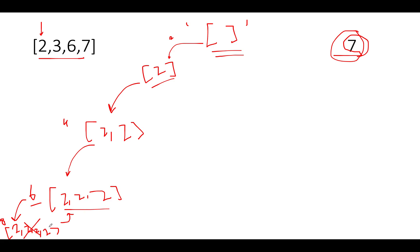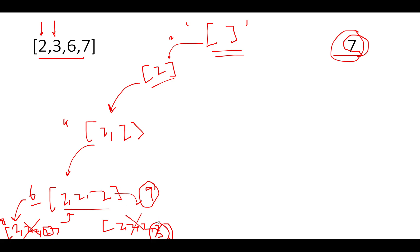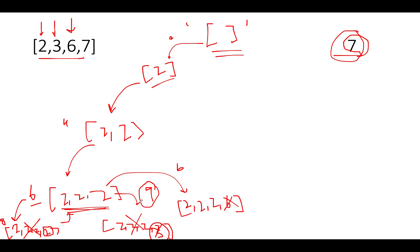We revert to [2, 2, 2] by deleting the last element. The next element in the array is 3, so we add it: [2, 2, 2, 3] gives a sum of 9, which is greater than 7 — invalid. We backtrack again, deleting 3. Deletion is very important and people tend to forget it. Back at [2, 2, 2], the next element is 6. Adding it: 2+2+2+6 = 12, also invalid.